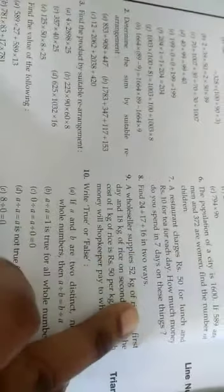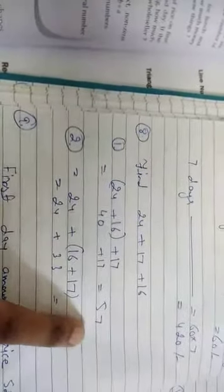Question number eight: Find 24 plus 17 plus 16 in two ways. Using the associative property of addition, we can add them in different orders and get the same answer. We need to show both methods to demonstrate the property.